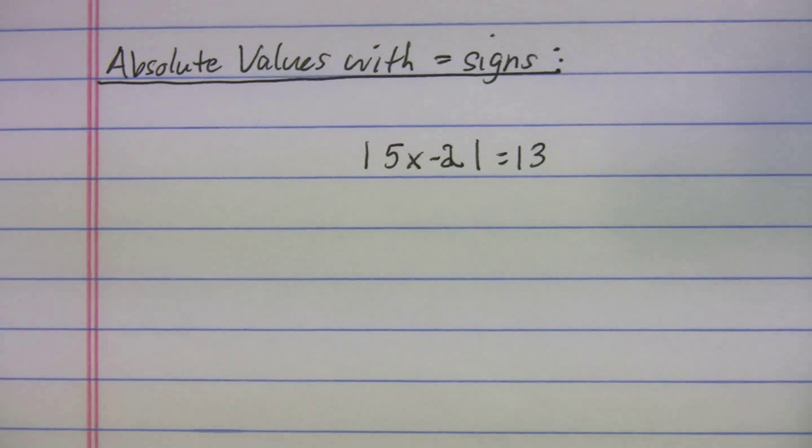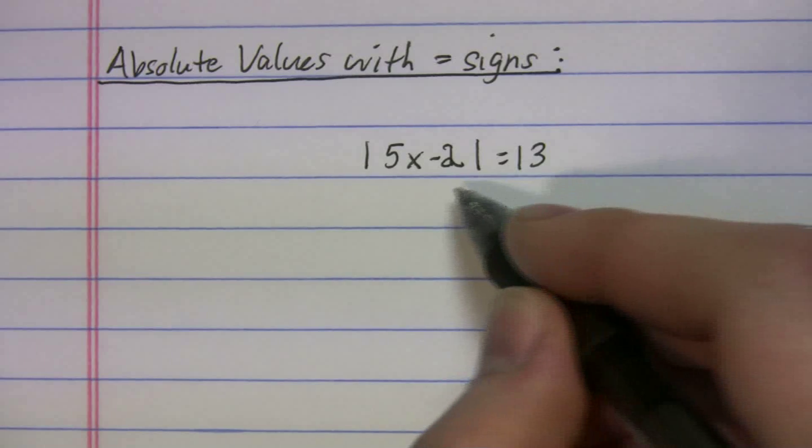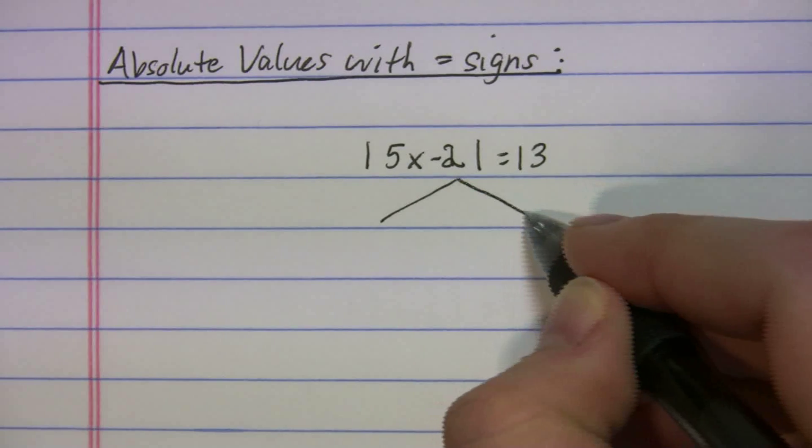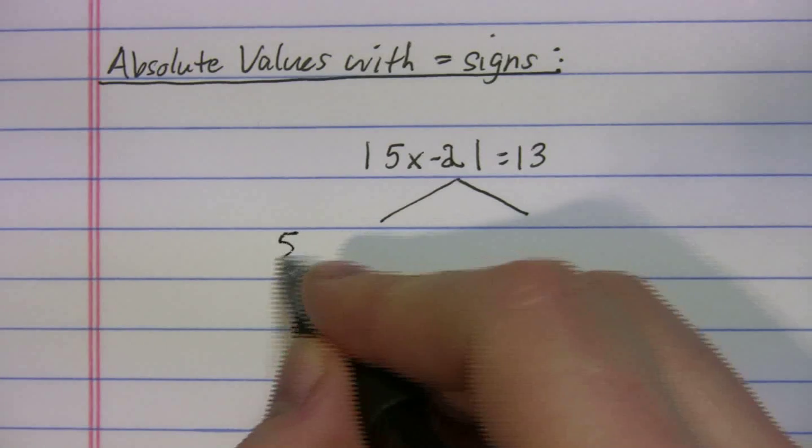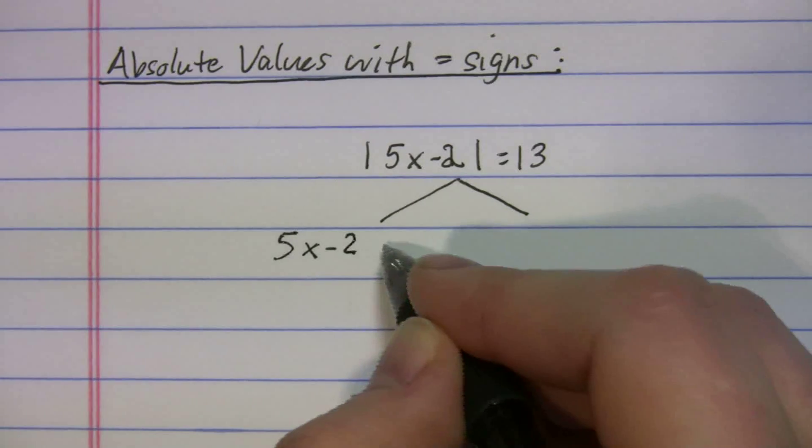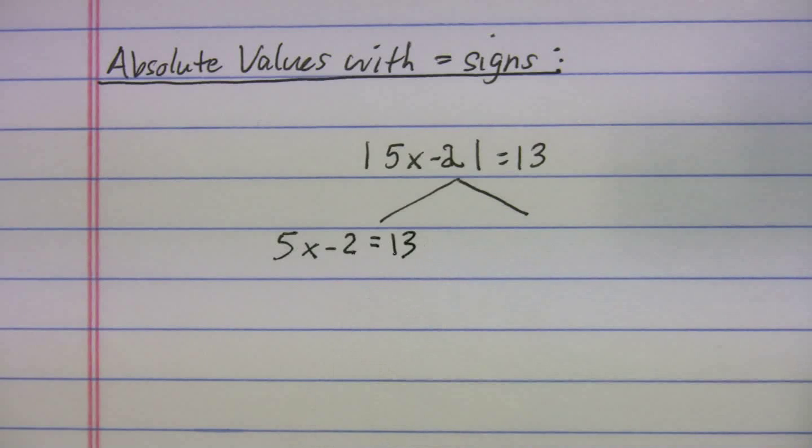So let me go through how you set this up. We have the absolute value of 5x - 2 is equal to 13. So here's what you're going to do on test day to solve these. You're going to set up two separate sides here. And the first thing you're going to do is write it over again. This is what I call our positive version.